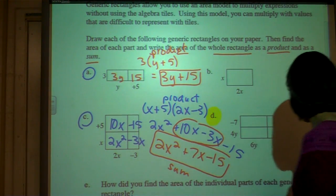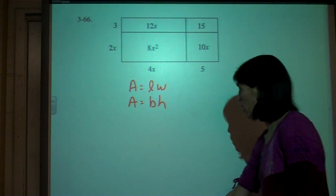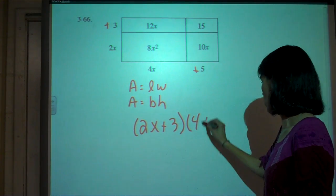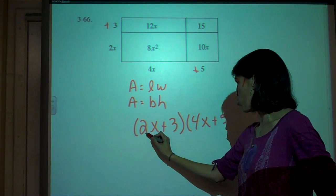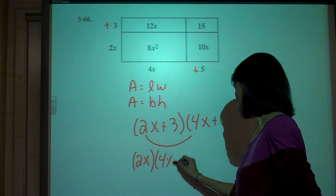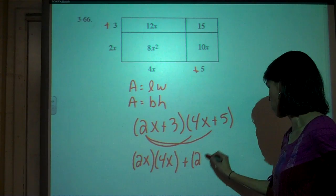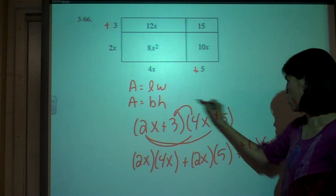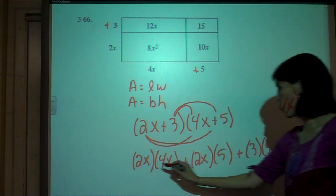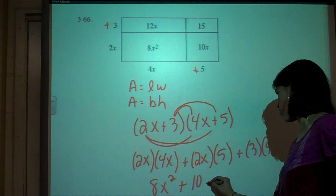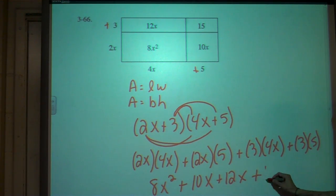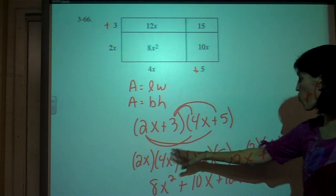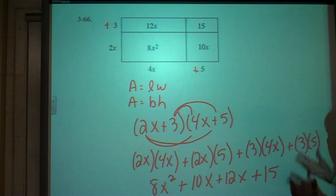Let me go back over the previous example — sorry for backtracking. This is a binomial times a binomial. If you distribute the 2x: 2x times 4x, plus 2x times 5; then distribute the 3: 3 times 4x, plus 3 times 5. If you look, that gives you 8x squared, 10x, 12x, and plus 15 — and there's your 8x squared, your 10x, your 12x, your 15. So we're really just distributing, but we're using the generic rectangle to organize ourselves as we do this.